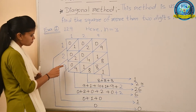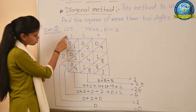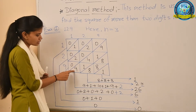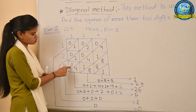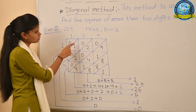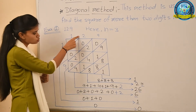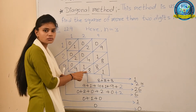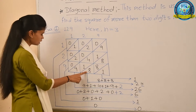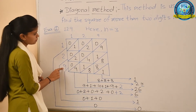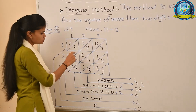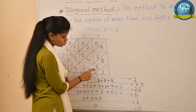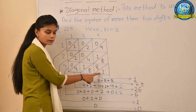Now we multiply 9×1, we get 9 — single digit — so we write 9 in the lower part and 0 in the upper part. Then 9×2=18, so we write 1 in the upper part and 8 in the lower part. Finally, 9×9=81, so we write 8 in the upper part and 1 in the lower part.